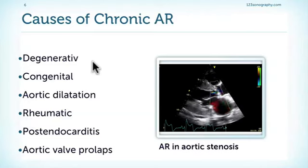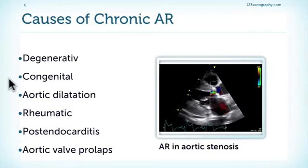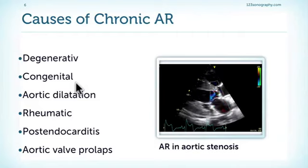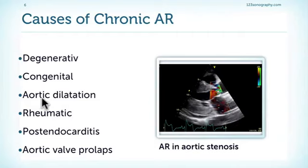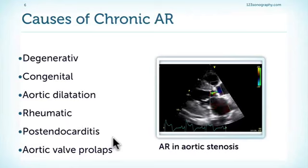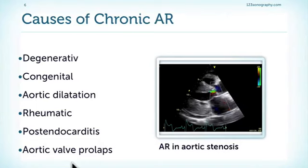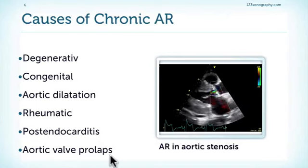Now we see most forms of aortic regurgitation caused by degenerative changes of the aortic valve, as seen in patients who also have aortic stenosis. Other causes include congenital defects of the aortic valve, dilatation of the aorta, rheumatic heart disease, endocarditis with destruction of the aortic valve, and aortic valve prolapse from various causes.